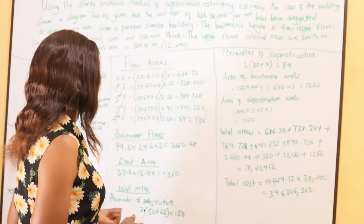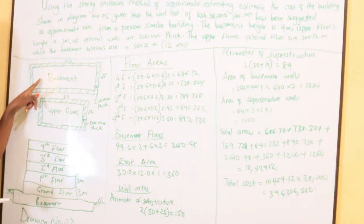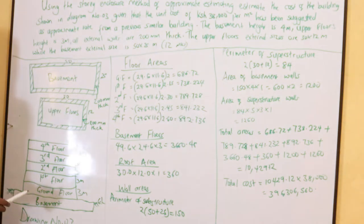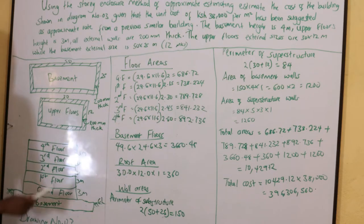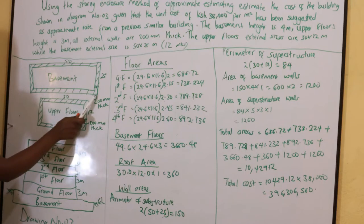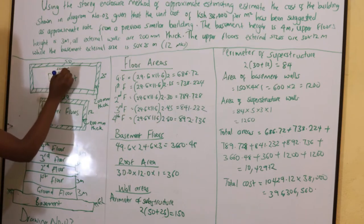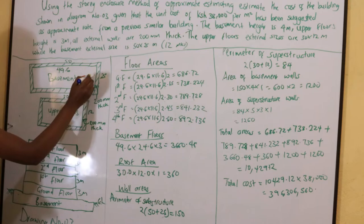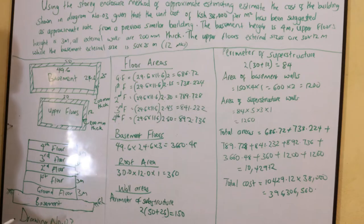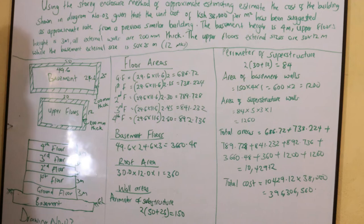For the basement floors, the external dimensions are 50 by 25 meters. Deducting 400 millimeters for wall thickness gives internal dimensions of 49.6 by 24.6 meters. The basement floor area is 49.6 times 24.6, weighted by a factor of 3, giving 3,616.48 square meters.